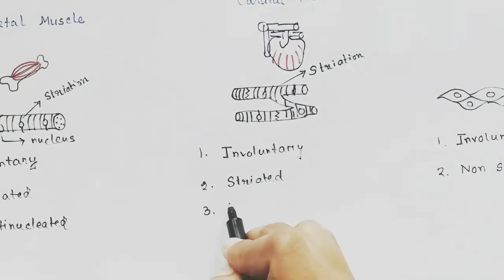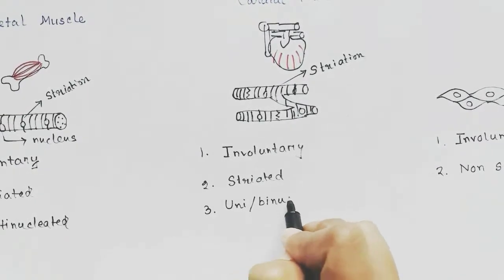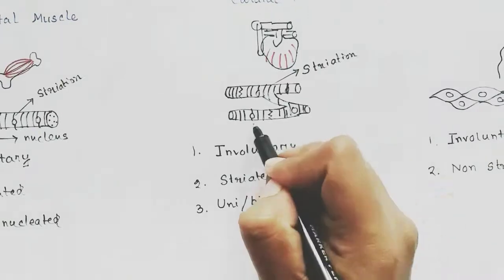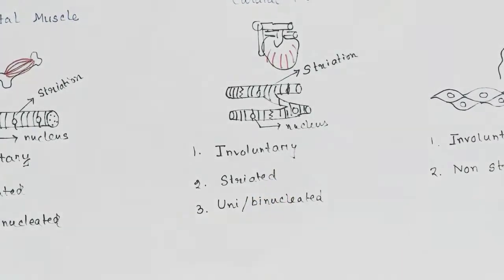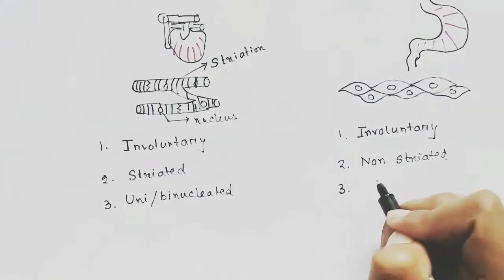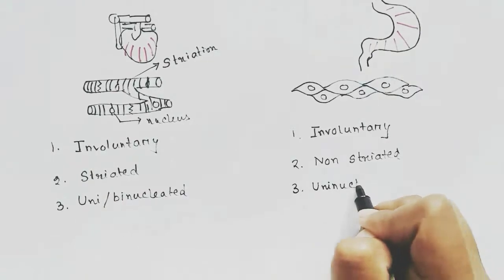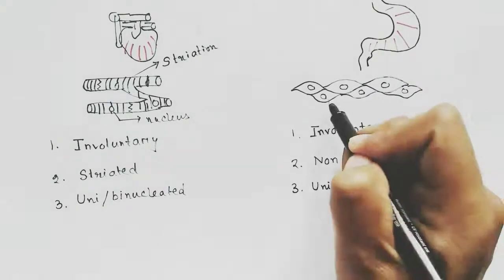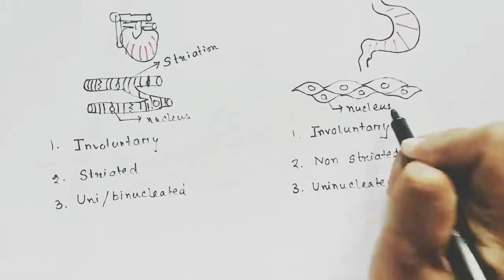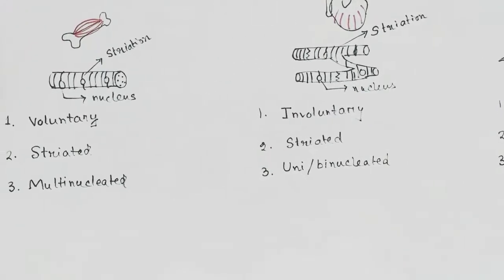The cardiac cell is uninucleated or binucleated, and the smooth muscle is uninucleated, one nucleus per cell.